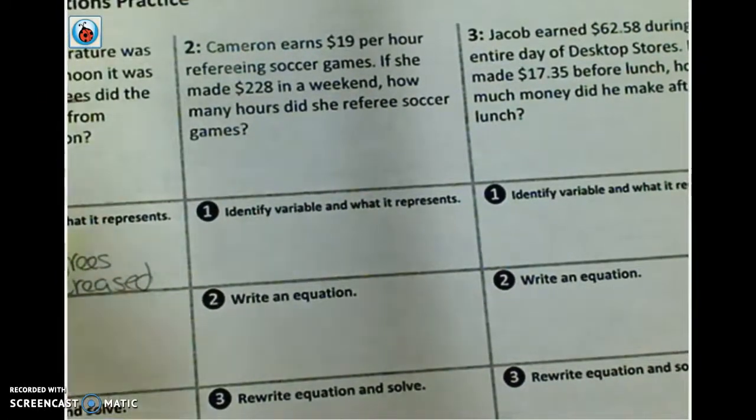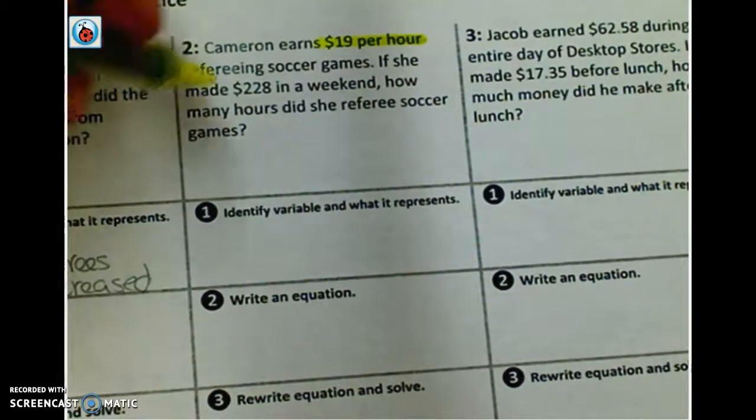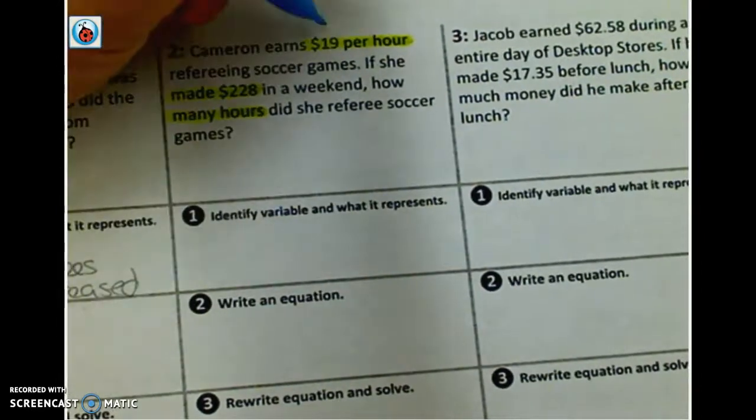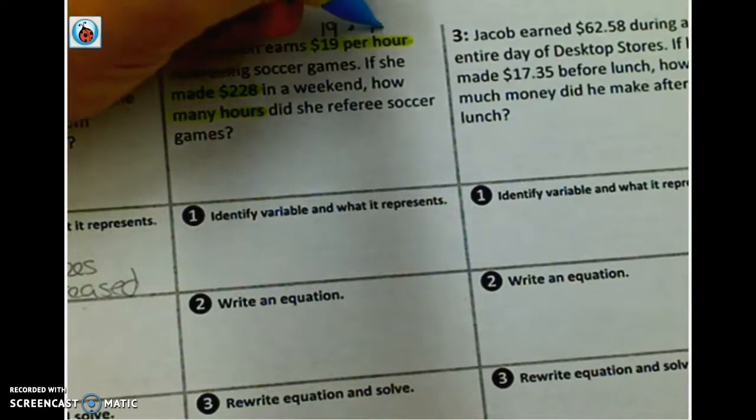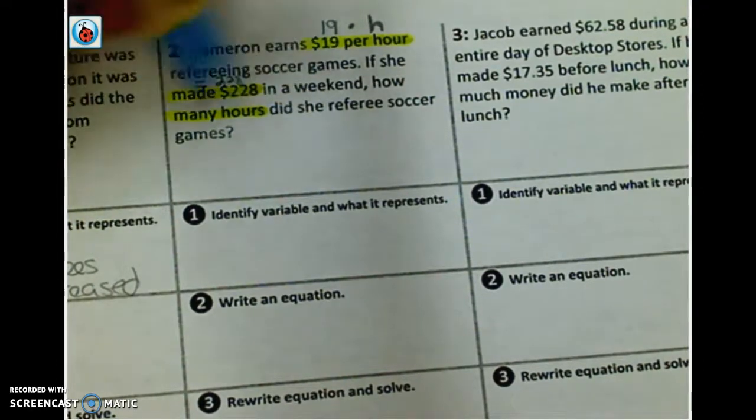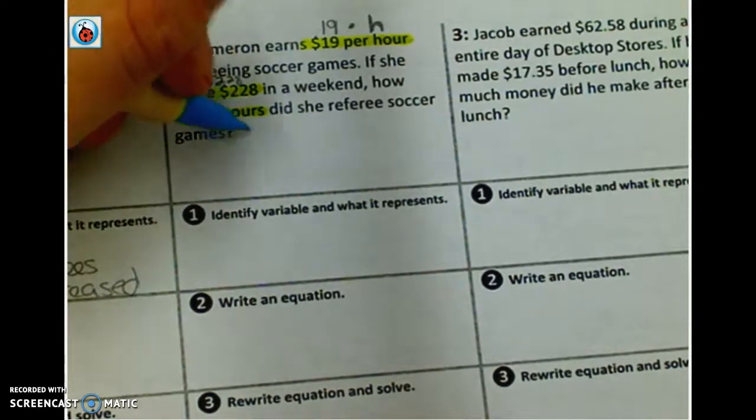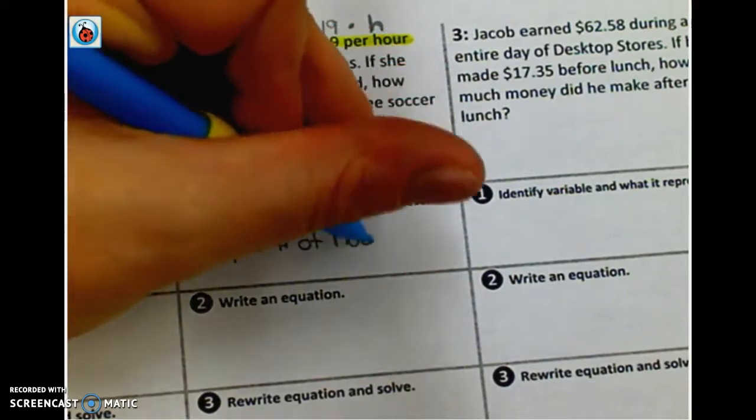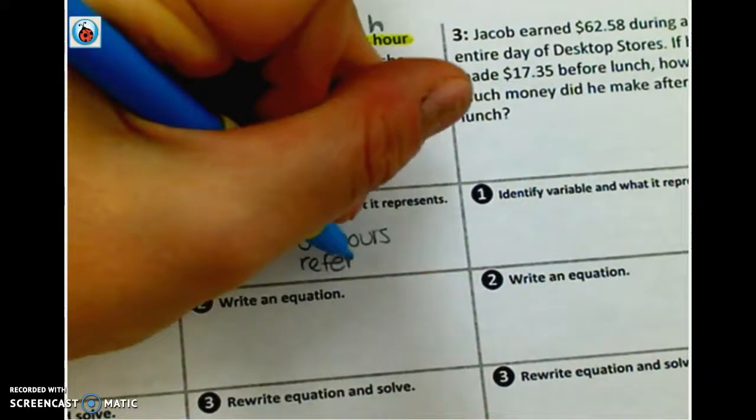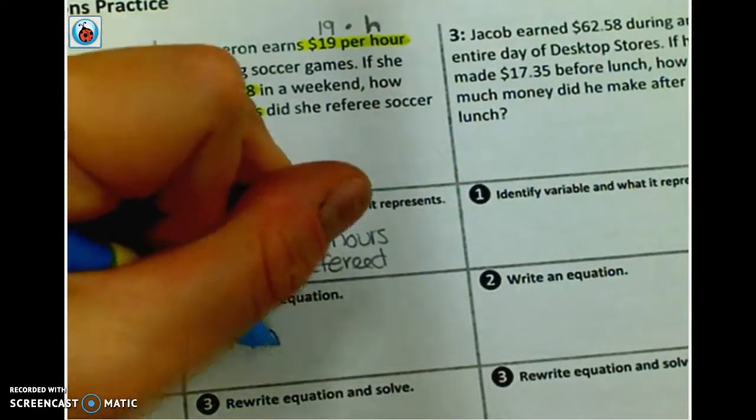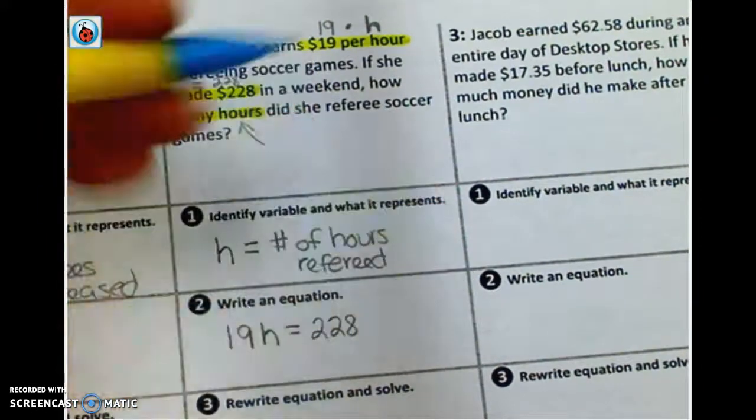Cameron earns $19 per hour. That's a key phrase. If she made $228 in a weekend, how many hours did she referee soccer games? So those are all some key phrases there. So I see that she makes 19 per means multiply hour. I don't know how many hours she worked. And look at that, that's my unknown. How many hours? But I know that she made a total equals 228. So those key phrases actually helped me to build my equation and find my variable. So my unknown is right here. That's what I'm trying to find out. So I'm going to use H to represent the number of hours refereed. That she did refereeing. Refereed. Okay? And you can see from my word problem I've already started working out. So my equation is going to be $19 per hour and she gets a total of 228. The end result was that.